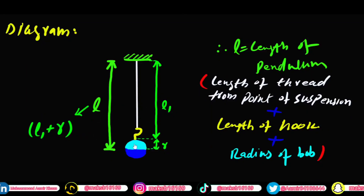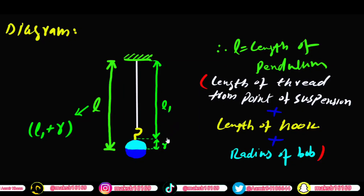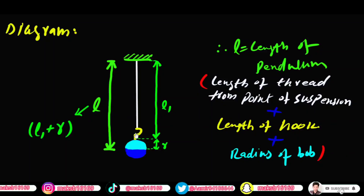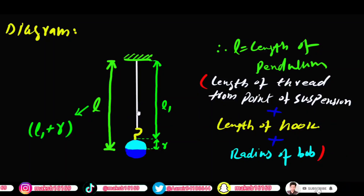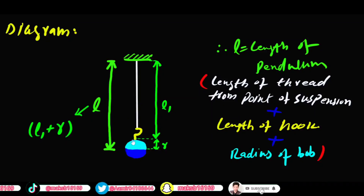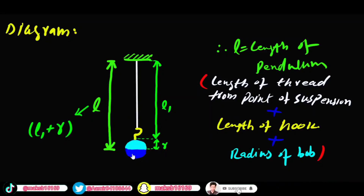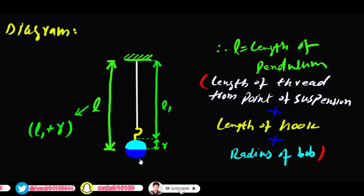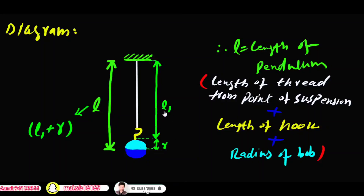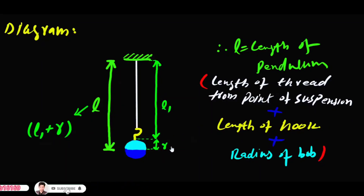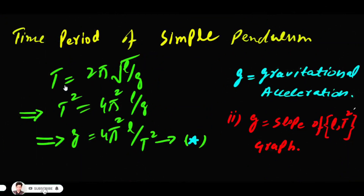Thread اور hook کی length کو meter rod کے ذریعے معلوم کیا جاتا ہے، جبکہ bob کا diameter vernier caliper استعمال کرتے ہوئے معلوم کیا جاتا ہے۔ اسے half کرنے پر radius آتا ہے۔ کیونکہ دو مختلف instruments سے یہ دو مختلف lengths لی جاتی ہیں، اس لیے انہیں L1 اور R کہتے ہیں۔